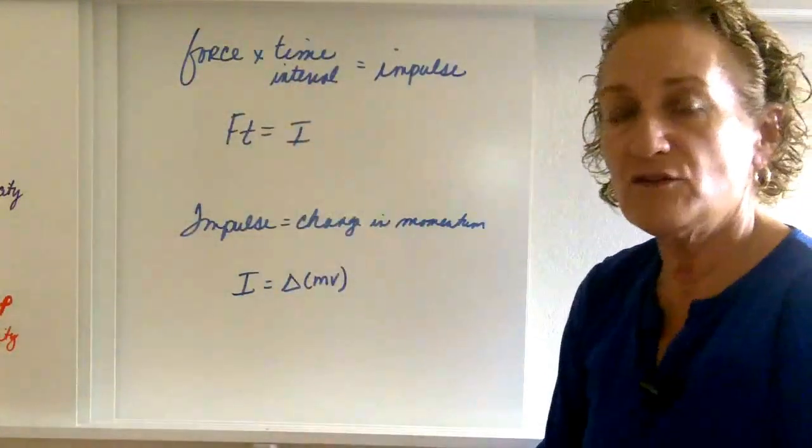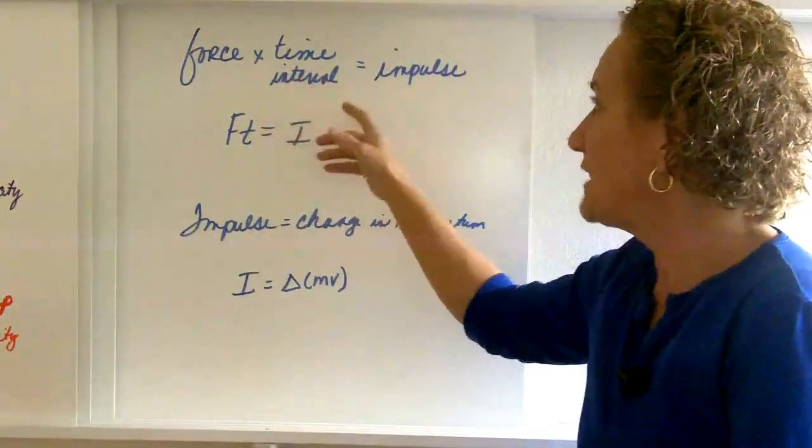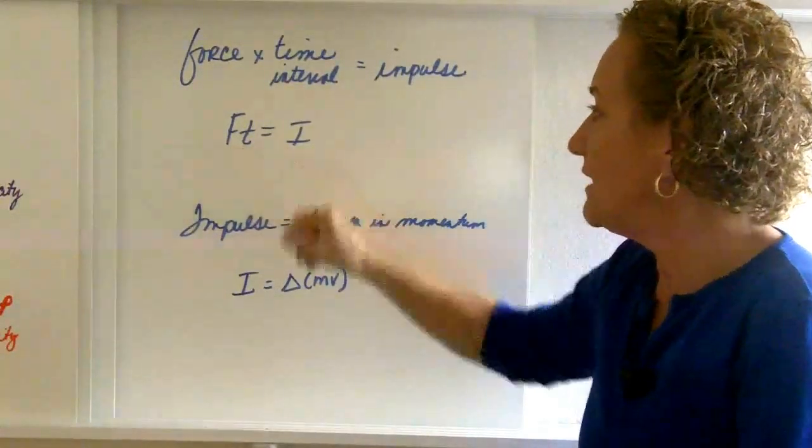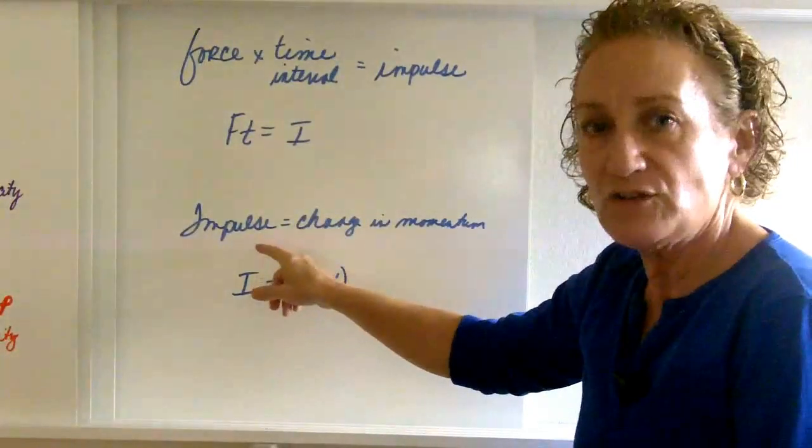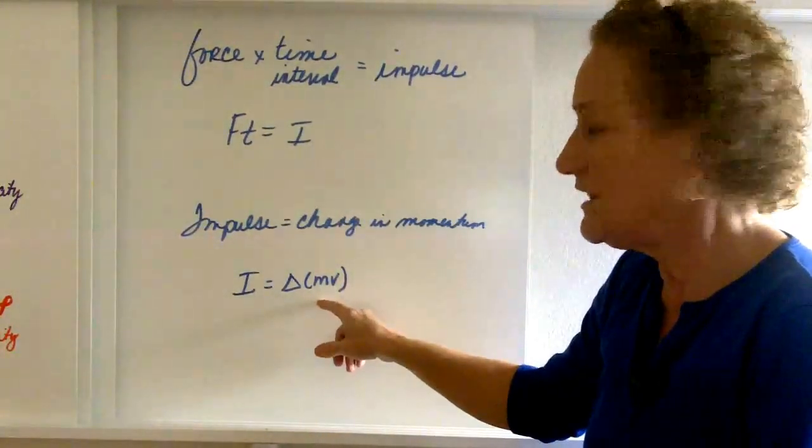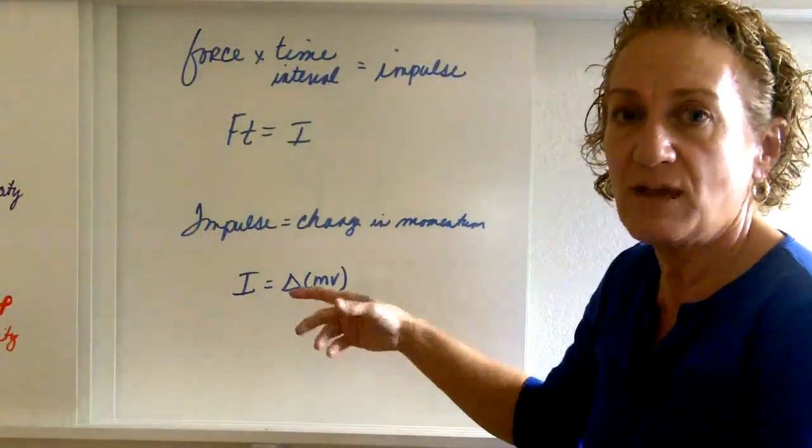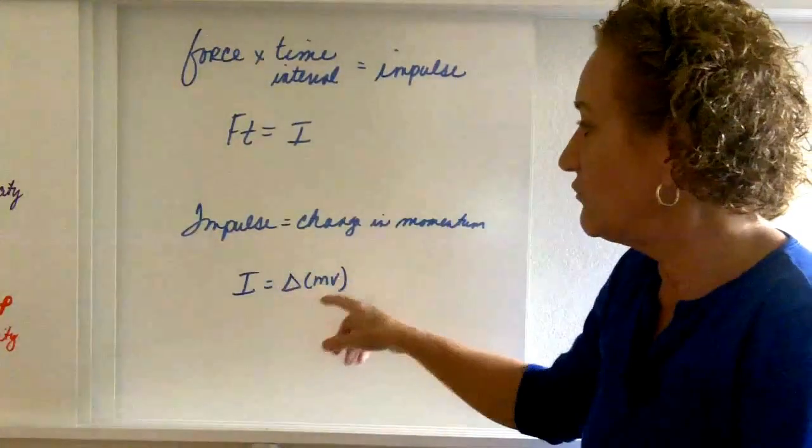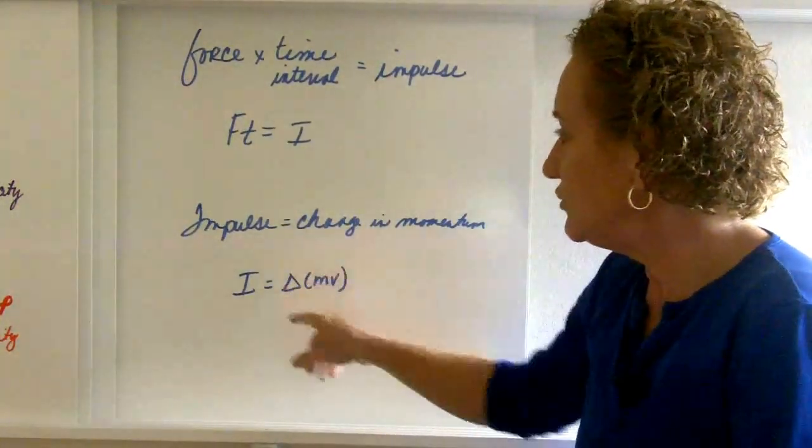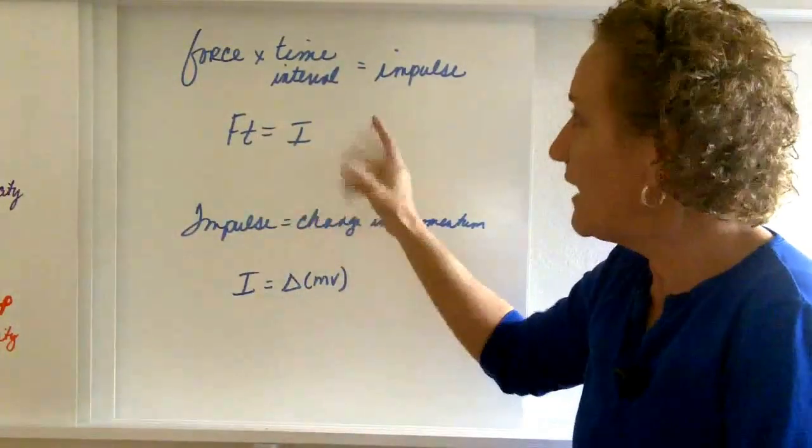Force times the time interval is how you mathematically calculate impulse. Force times time equals impulse. But I also said that impulse was equal to a change in momentum. And we can represent change in momentum like this: delta meaning change in mass times velocity. Mass times velocity is momentum. So what we're going to address next time is what happens when we set this change in mass times velocity equal to force times time.